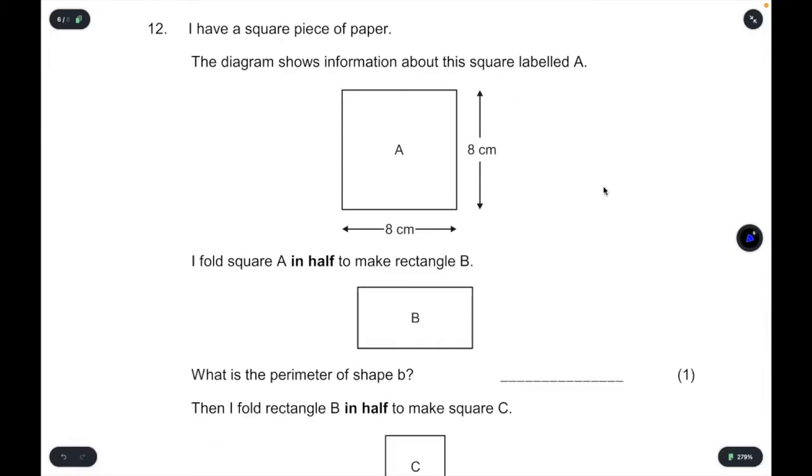Question 12, I have a square piece of paper. The diagram shows information about this square labelled A. I fold square A in half to make rectangle B and square A, according to these dimensions, is eight centimetres by eight centimetres. What is the perimeter of shape B or of rectangle B? Well, if we've halved the square, then that means that one of the dimensions of the square remains the same. So this is still eight, but this has halved. So instead of eight, this is going to be eight divided by two, which is four. Then, of course, we need to be careful to see, are we doing area or perimeter? We are doing perimeter. So perimeter means the distance all the way around the shape. Therefore, we're doing eight add four, add eight add four, or we could just do eight add four is 12 times two is 24. Units they have not provided, so we need to do that. In this case, it's perimeter, which means the units will be in centimetres.